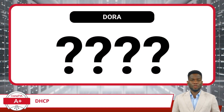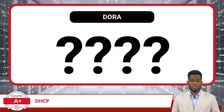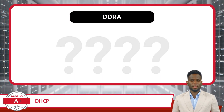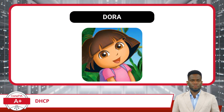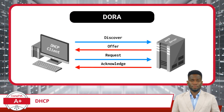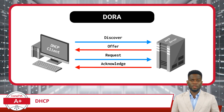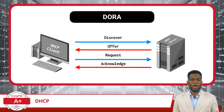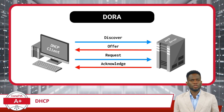Now, let's talk about how DHCP does its job. The secret to DHCP is DORA. This DORA stands for Discover, Offer, Request, and Acknowledge, and is a four-step process.